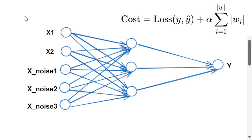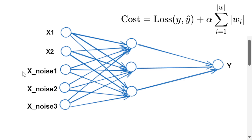What we are going to do is create a dataset with five features where the first two features will help us construct the target value. The target value will depend on x1 and x2, and there will be no relationship between the target value and the three noise features.